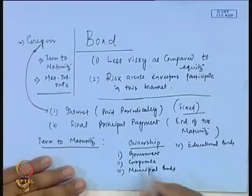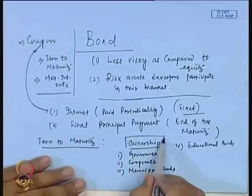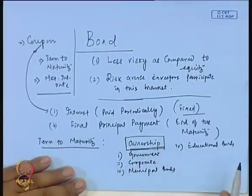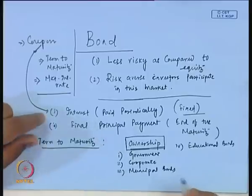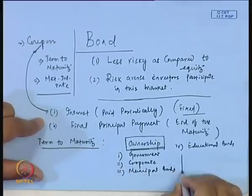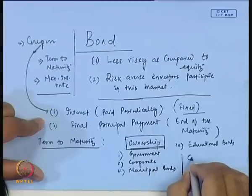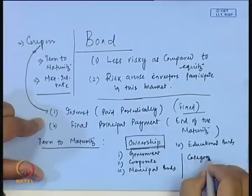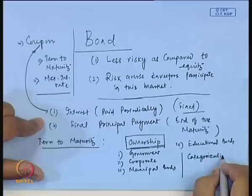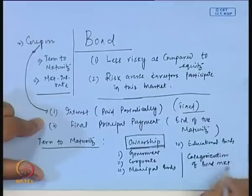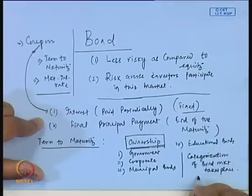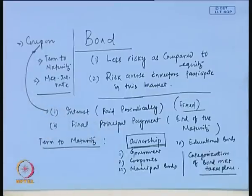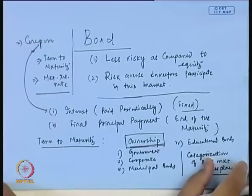So, who is issuing the bond? That means, on the basis of the ownership, the bond market has been categorized. This is another way how the bond market can also be defined in a particular situation.